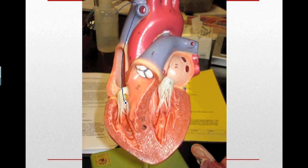It goes past the tricuspid valve into the left ventricle, out through the pulmonary semilunar valves, out the pulmonary trunk and out to the lungs via the pulmonary arteries, both left and right.